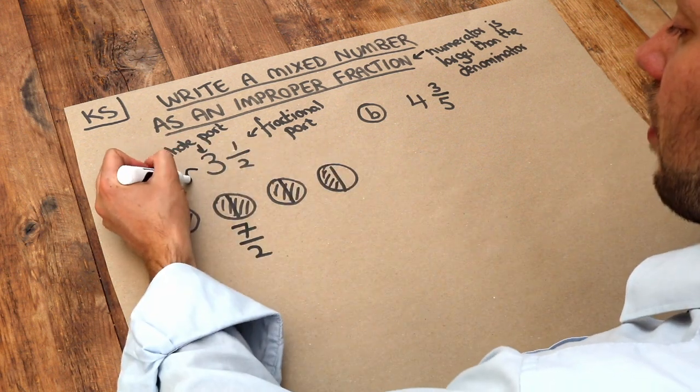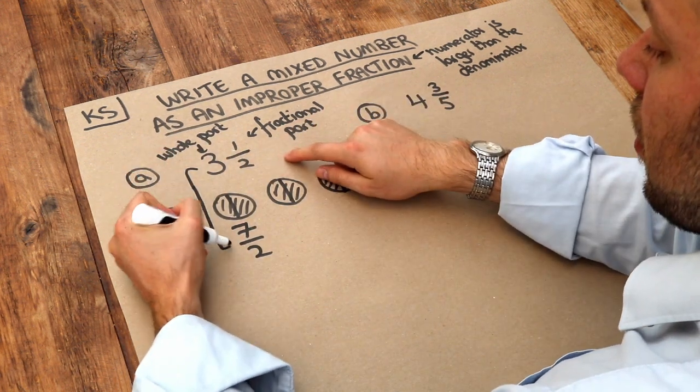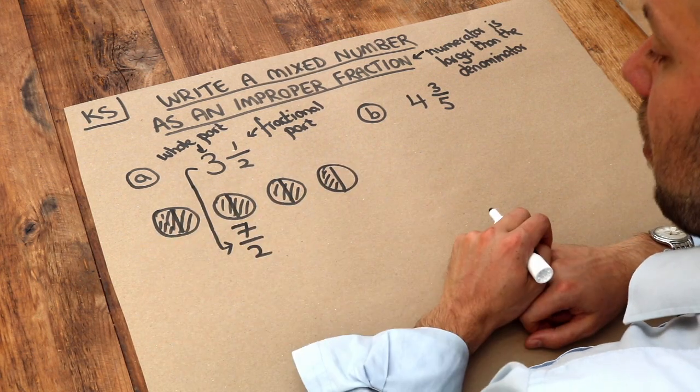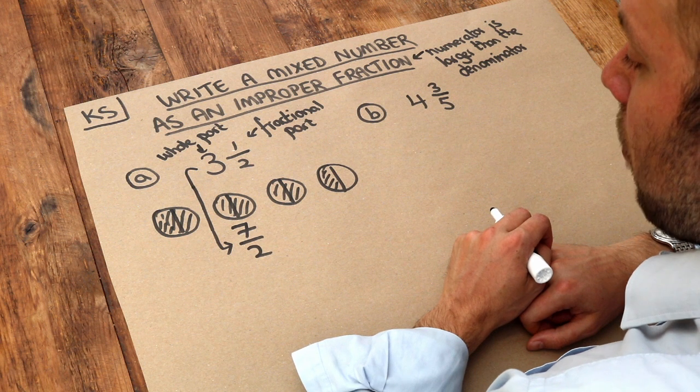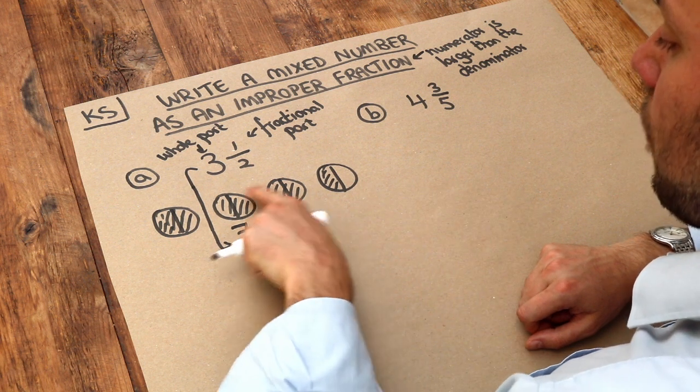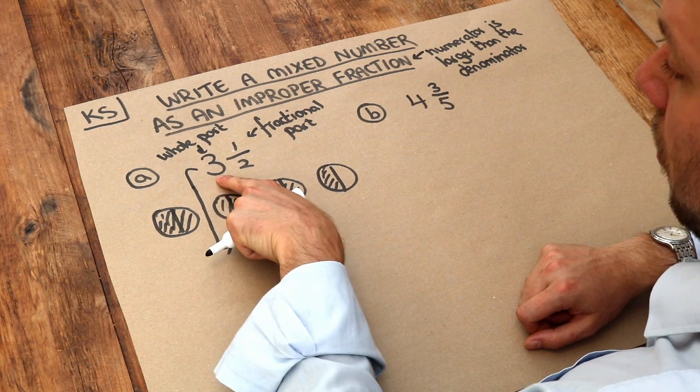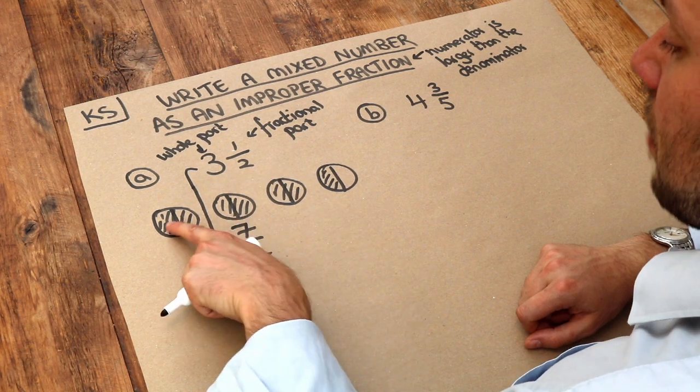Now can we think of a quick way of converting this mixed number to this improper fraction without having to draw out diagrams each time? Well let's consider how many halves we had in these four pizzas. Well we had three full pizzas because that whole part is three and each is split into two.